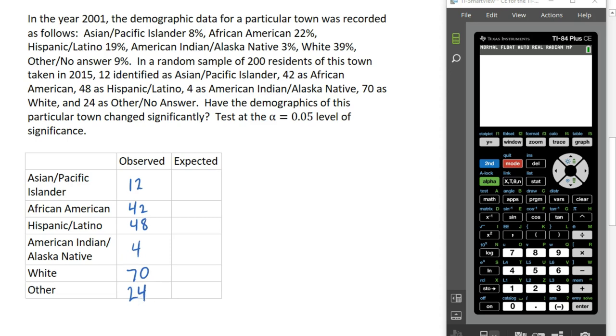To compute the expected counts, we take the probabilities from the distribution multiplied by our sample size of 200. So the expected count for residents who identify as Asian Pacific Islander would be 8% of the sample size of 200, which is 16.